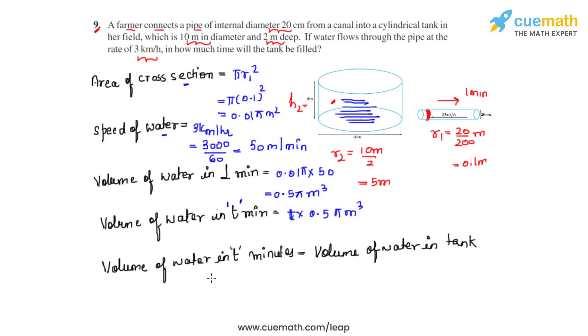So that is t times 0.5π to be equal to π times R2 squared times h2. In place of R2 squared we can write it as 5 squared, and in place of h2 we can write it as 2. So π and π gets cancelled.